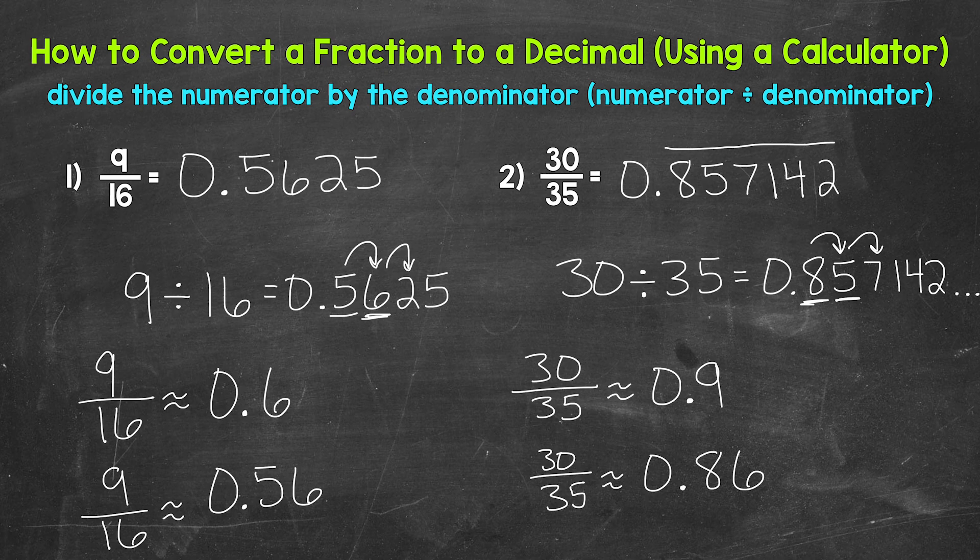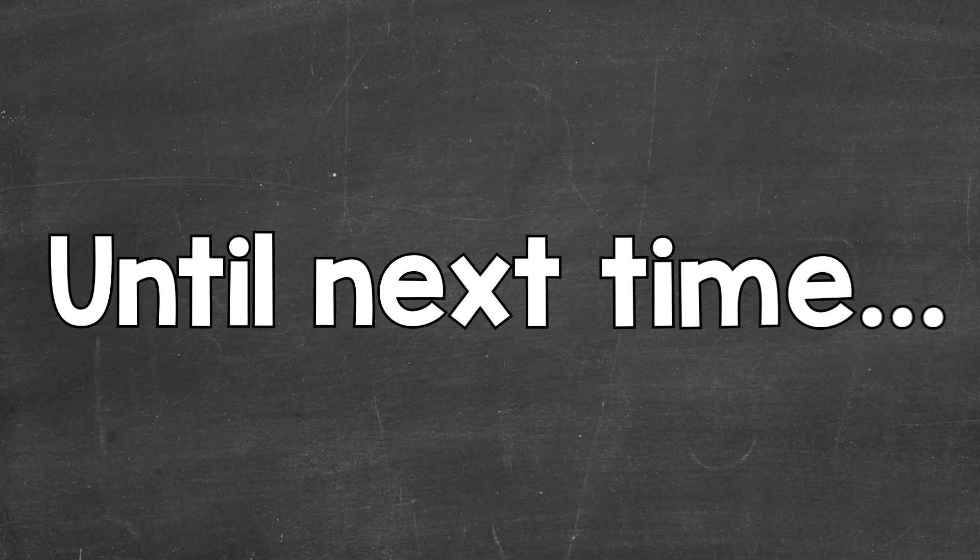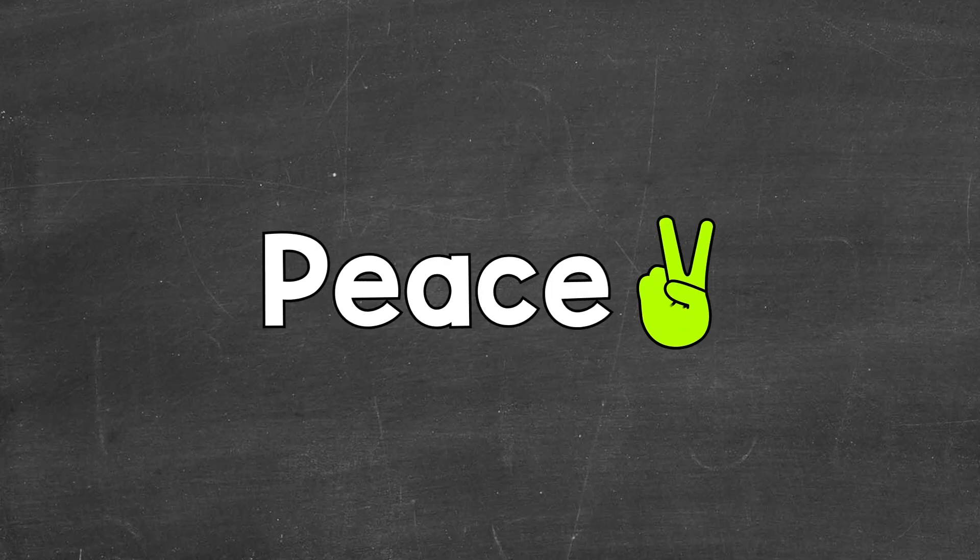So there you have it. There's how to convert a fraction to a decimal using a calculator. Divide the numerator by the denominator. And then if we get a repeating decimal or a long decimal, rounding is always an option. I hope that helped. Thanks so much for watching. Until next time, peace.